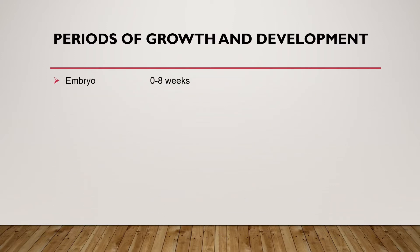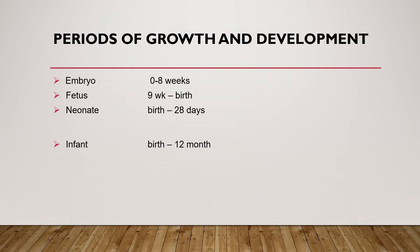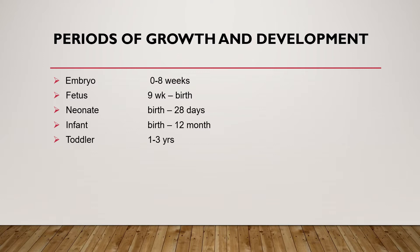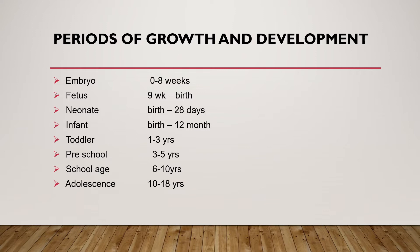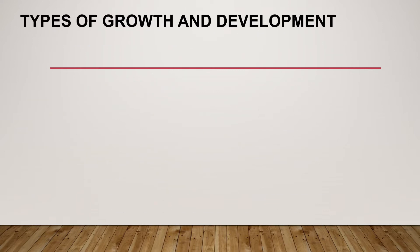Periods of growth and development: human development starts from the embryonic age, which is from fertilization up to eight weeks. The fetal period is from nine weeks to birth. The neonatal age is from birth to 28 days. Infant is from birth to 12 months. Toddler is from one to three years. Preschool is from three to five years. School age is from six to eight years. Adolescence is from 10 to 18 years.